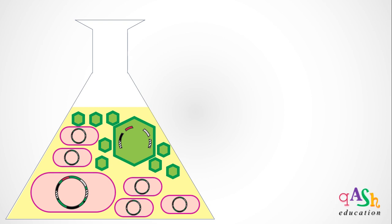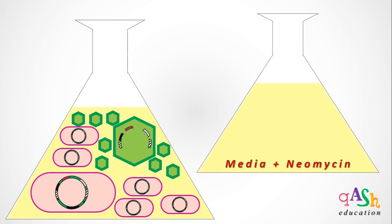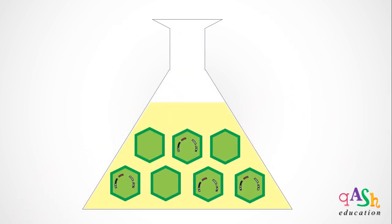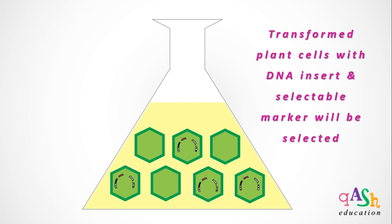Now, from the mix of transformed and untransformed plant cells, to select only the transformed plant cells, a selective medium is used. This selective medium contains neomycin. All plant cells, both transformed and untransformed, are incorporated into this selective medium containing neomycin antibiotic. Only plant cells that have undergone transformation and carry the neomycin resistant gene will be able to survive and grow in this media. The untransformed cells will be destroyed and will not be able to grow.